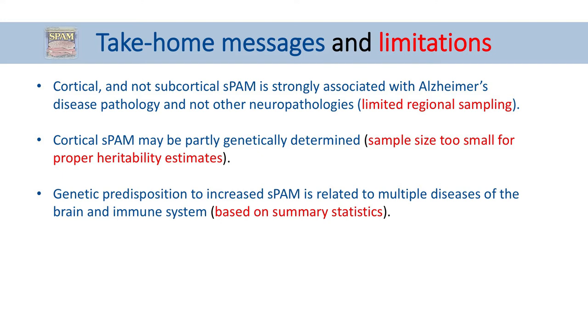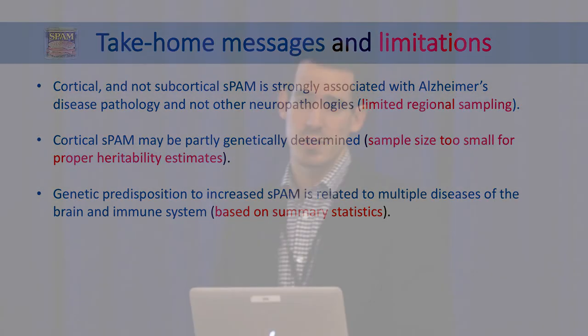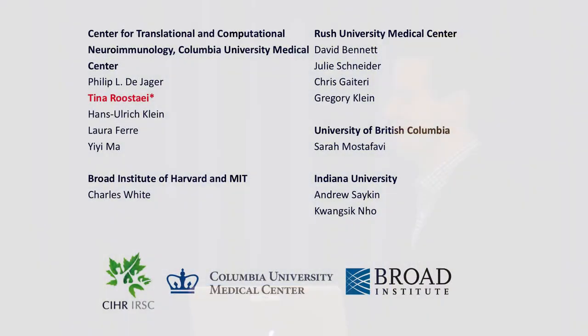Take-home messages: it's cortical, not subcortical, microglial activation that is associated with Alzheimer's disease pathology and not other pathologies. Cortical SPAM may be partly genetically determined based on GWAS results, though sample size is too small for proper heritability estimates. The genetic predisposition to SPAM is related to multiple other diseases — primarily Alzheimer's disease and educational attainment — but that's based on summary statistics.